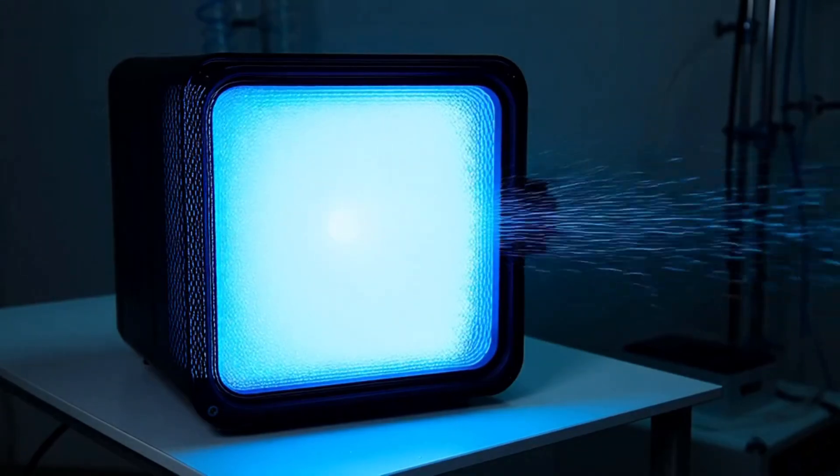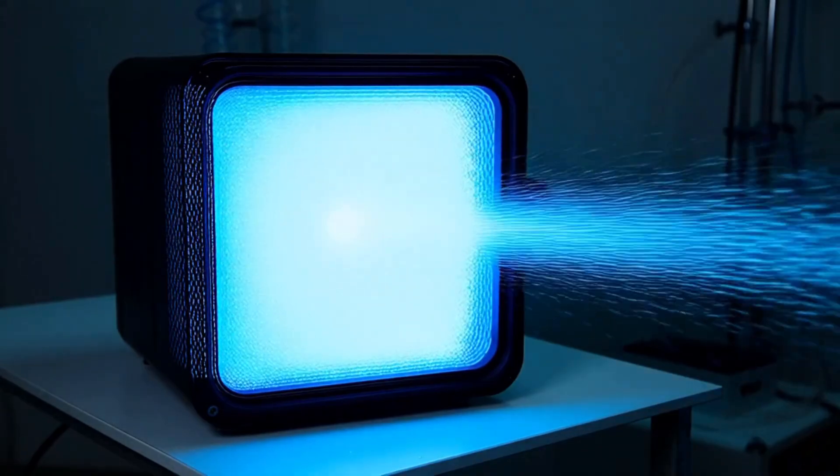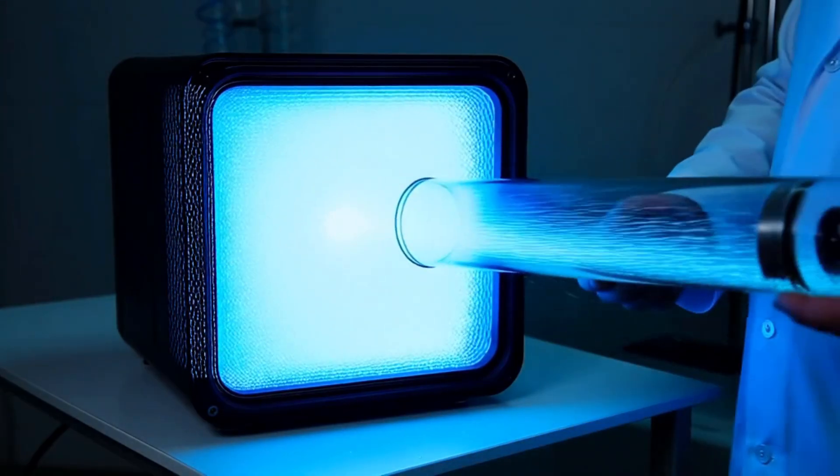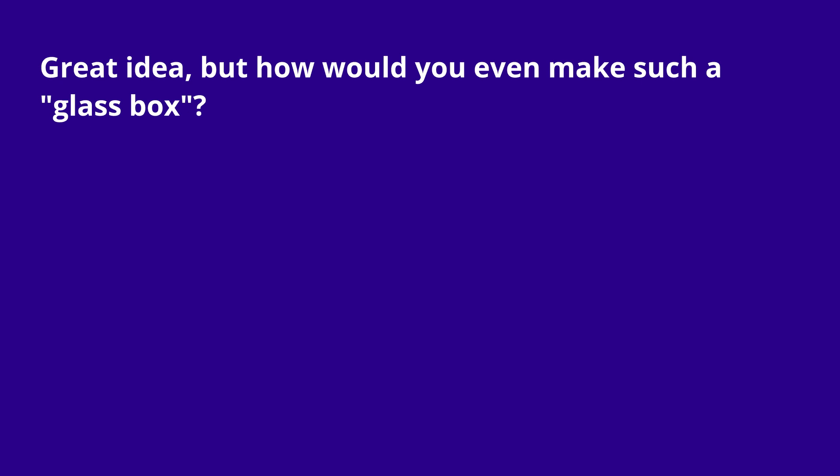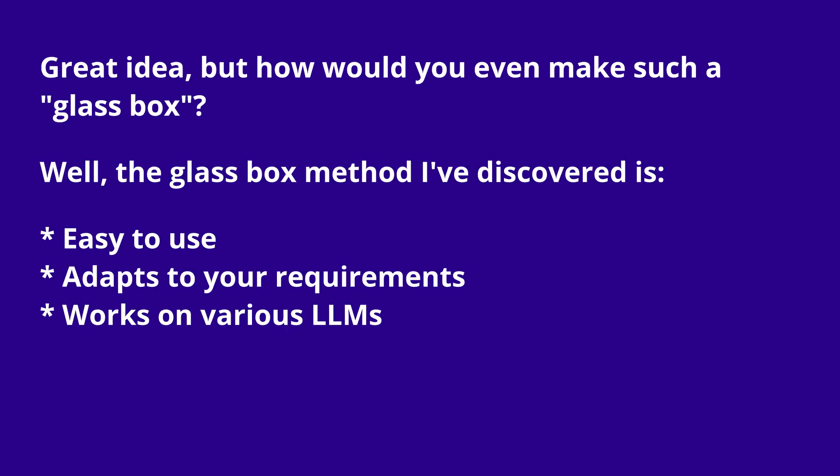Now imagine how difficult a sentient AI black box would be. Maybe a glass box could help align the output. That's a great idea, but how would you even make a glass box? The method I've discovered is easy to use, adapts to your requirements, and works on various large language models.